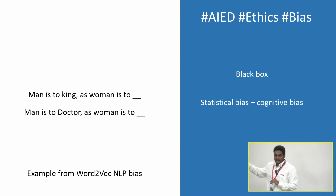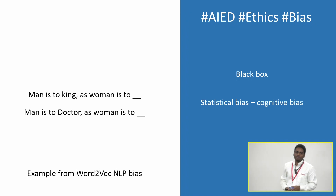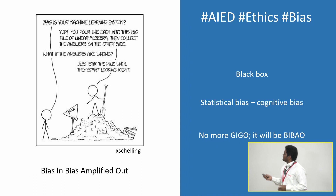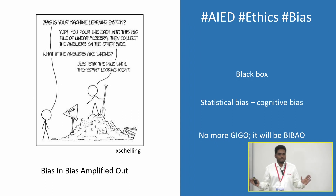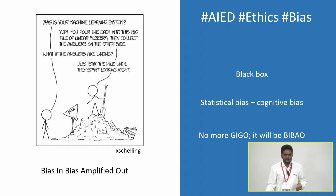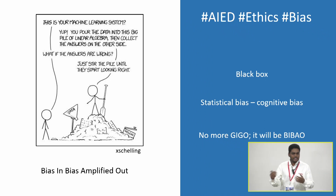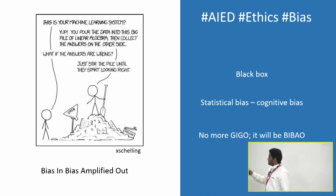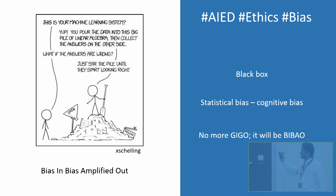In traditional computer science, garbage in means garbage out — you see the output error and debug accordingly. But AI algorithms take it to a very different level: bias in, and the bias will be amplified out. Whatever mistakes are in the input will be amplified beyond control.